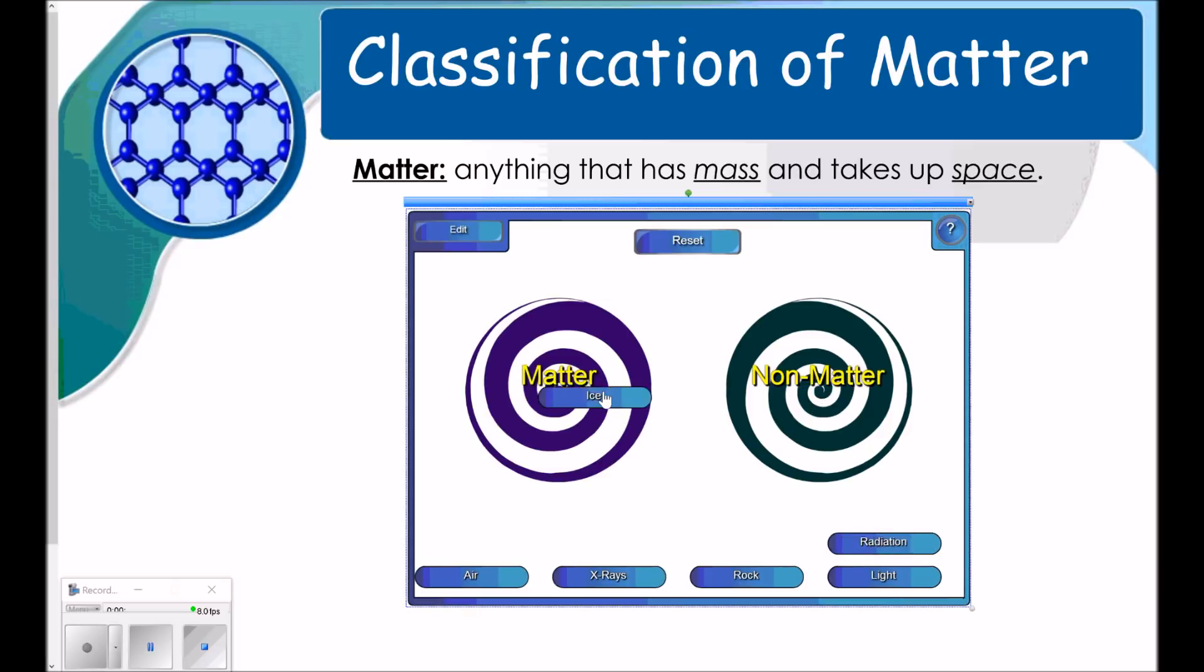Ice takes up space and has mass. Radiation is just energy. A rock takes up space and has mass. So does air. But x-rays and light are both non-matter. And lastly, I've got salt here. It takes up space and has a mass. So make sure that you wrote down a couple examples of each type.